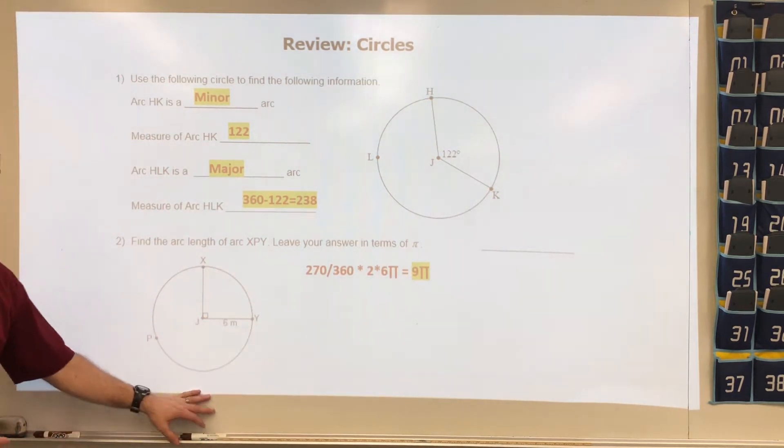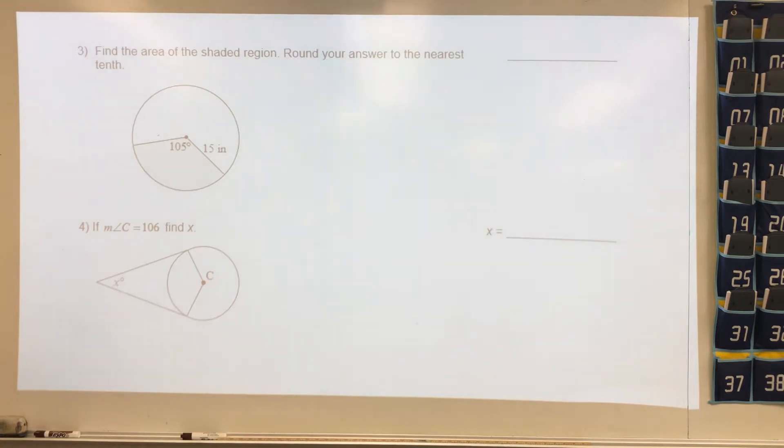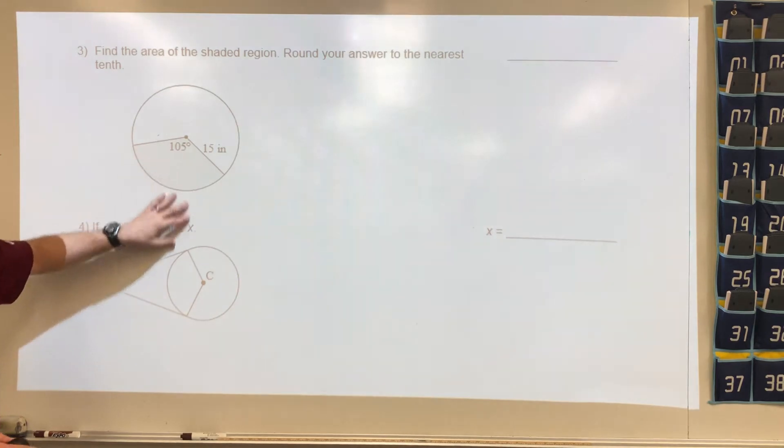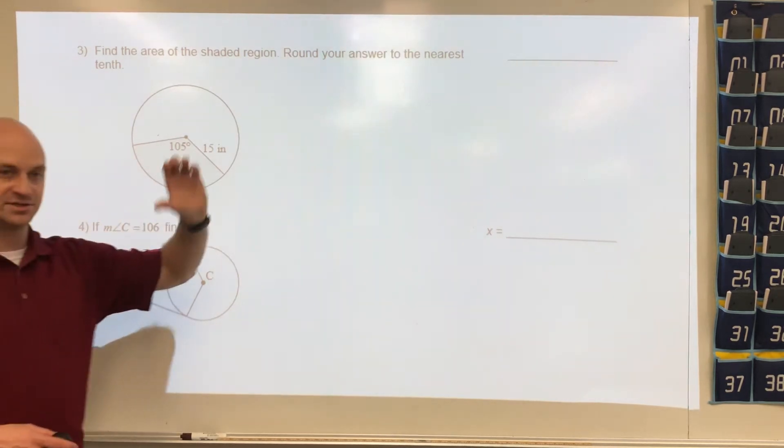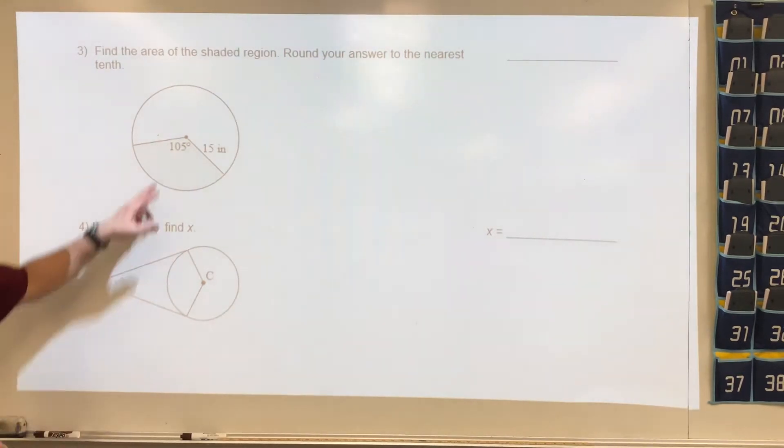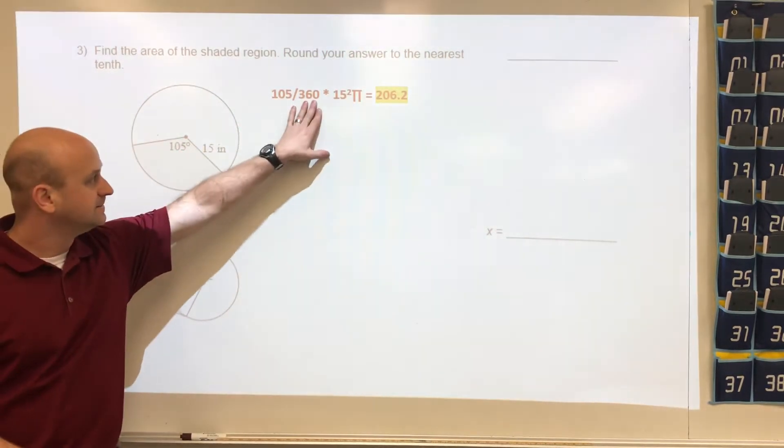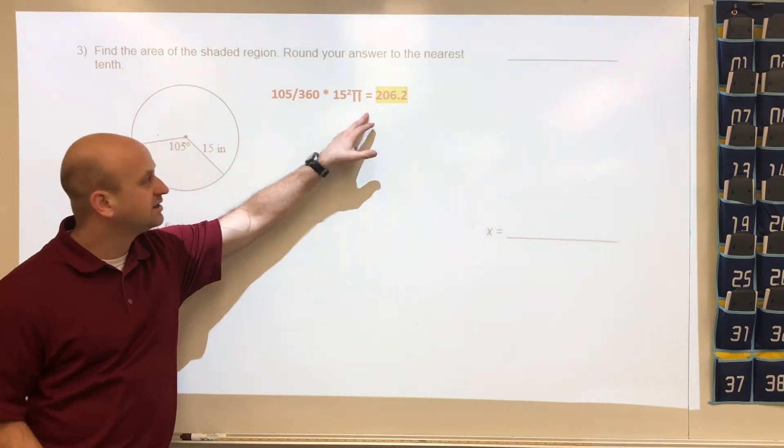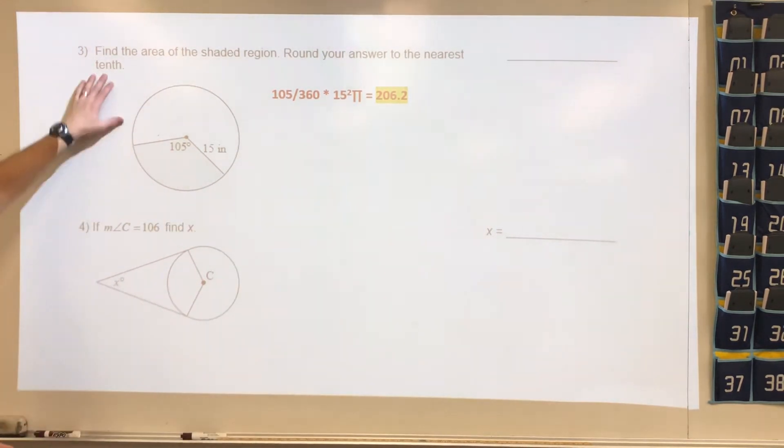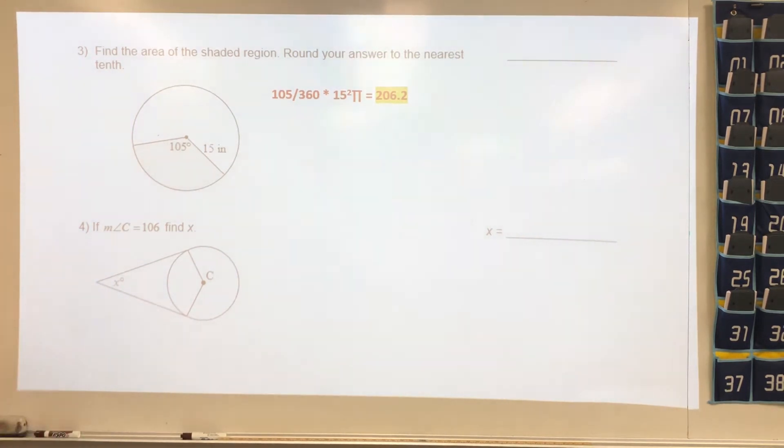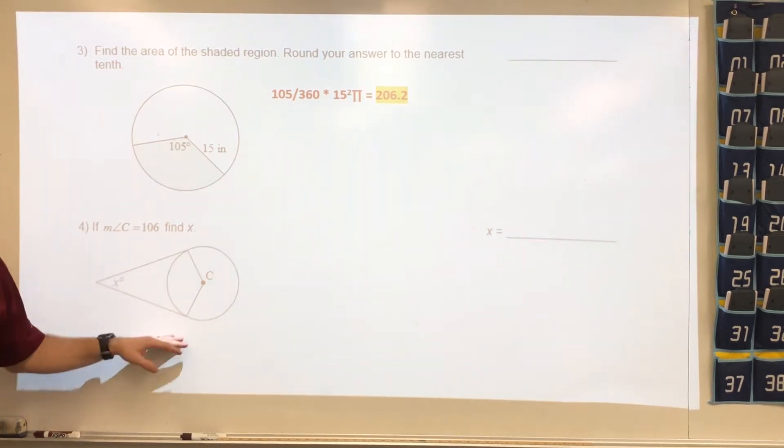Next question talks about the shaded region. In this problem, this is the shaded region they're talking about. What we're going to do is take the degrees divided by 360 times the area of the circle. In this case, it's going to be 105 divided by 360 times the radius squared times pi. Because they want it to the nearest tenth, the final answer will be 206.2 as your area.